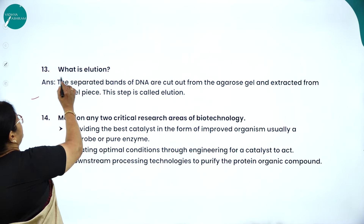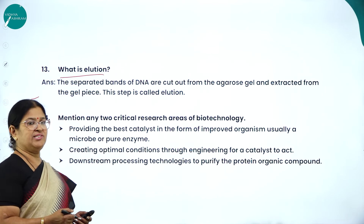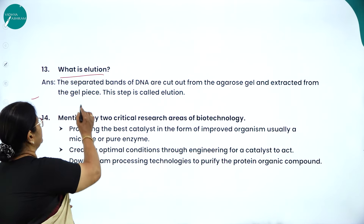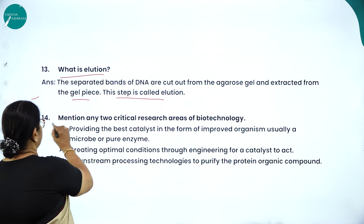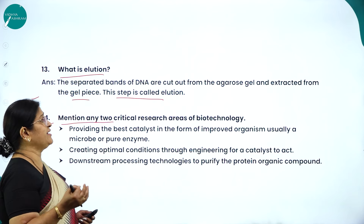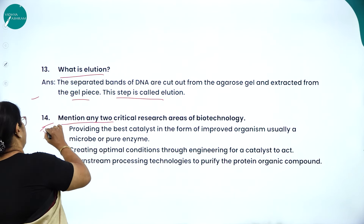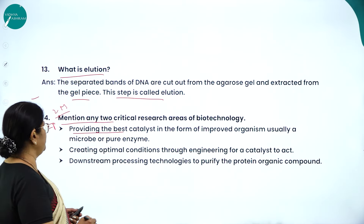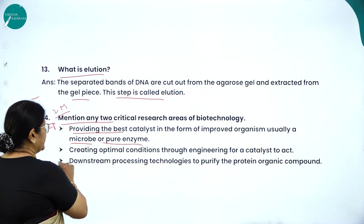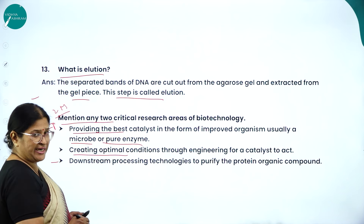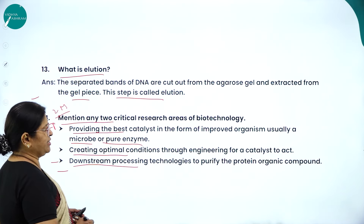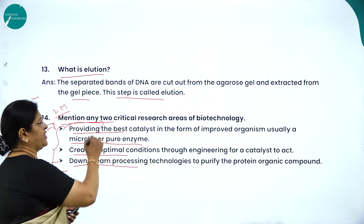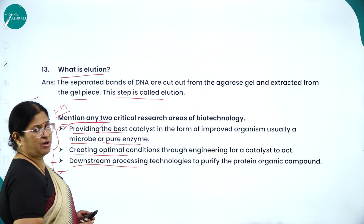Elution: the separated bands of DNA are cut out from the agarose gel and extracted — this step is called elution. Two critical research areas of biotechnology: providing the best catalyst in the form of an improved organism (usually a microbe) or pure enzyme; creating optimal conditions through engineering for the catalyst to act; and downstream processing technologies to purify proteins and organic compounds.